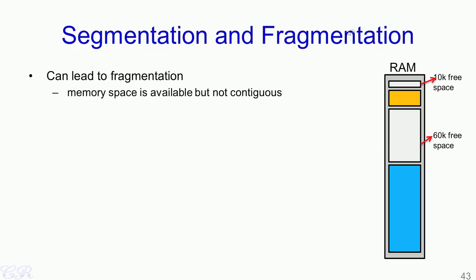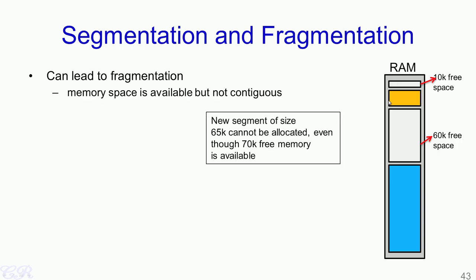One of the biggest problems with segmentation is fragmentation. For example, we have 70 kilobytes of space which is free in RAM. However, the free memory is not in contiguous locations — we have 60 kilobytes of free space in one chunk and another 10 kilobytes of free space in another chunk. This cannot be used to allocate a new segment of 65 kilobytes. So even though there are 70 kilobytes of free memory available, the memory is not in contiguous locations and therefore cannot be used.